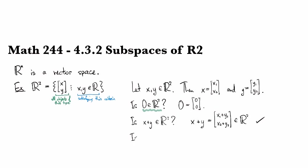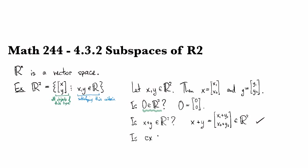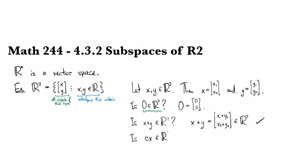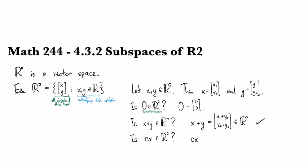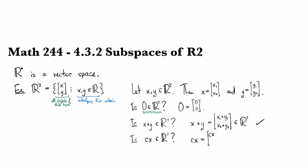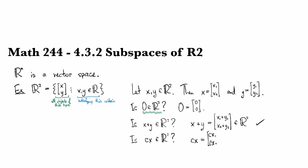What about is c times x going to be an element of R2? So cx is, by our definition of scalar multiplication, cx1, cx2.